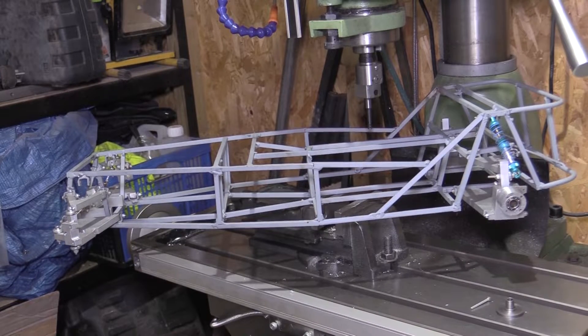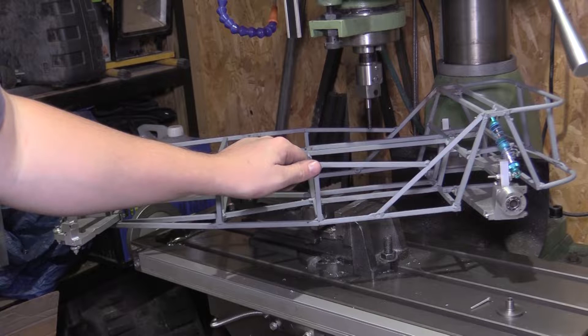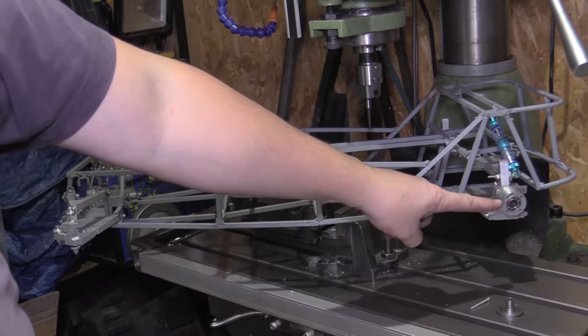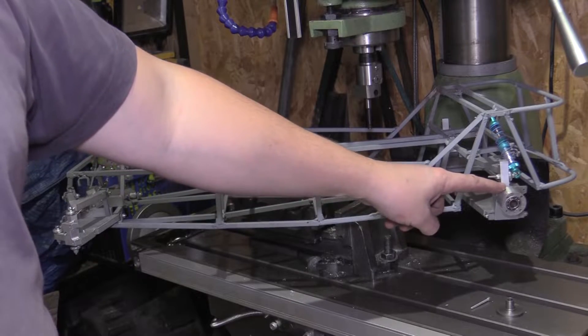Hello and welcome back to Mr Mechanical. This time we're back working on the mini catering, and in this video we're going to be CNC milling the rear wheel hub bearing carriers.